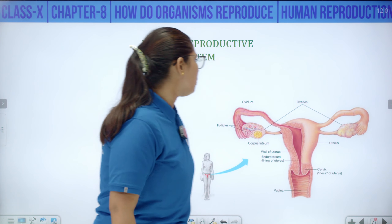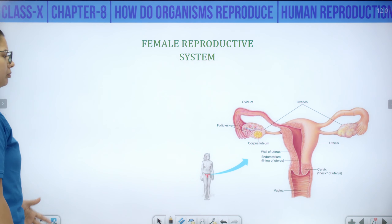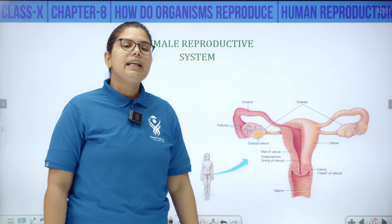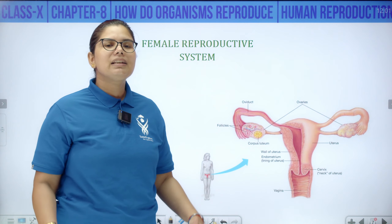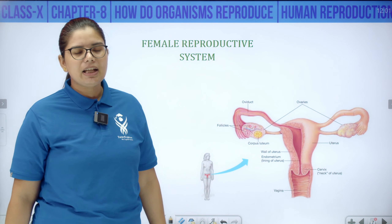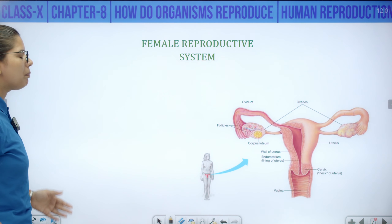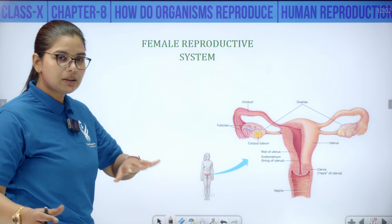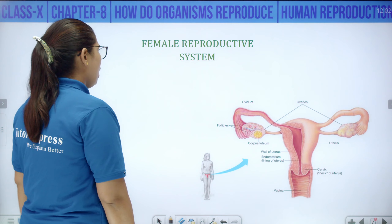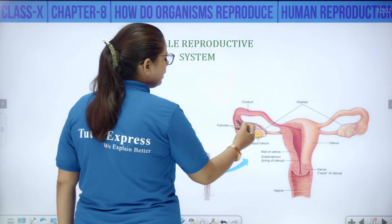Now let us talk about the female reproductive system. The female reproductive system lies in the pelvic cavity — the pelvic area, which is the waist region. There is a pair of ovaries in the female reproductive system.